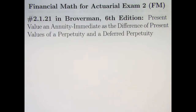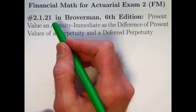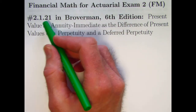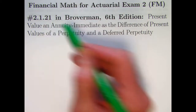In the last video, which was video number 34, we looked at the idea of a deferred annuity and relating the present value of a deferred annuity as the difference of two annuities immediate. That was problem 2.1.22. We're going backwards in the book by Brogerman to 2.1.21 in this video.